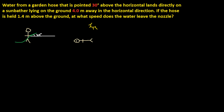Here's our little guy, pointing this nozzle of the garden hose towards this unknowing sunbather. The water stream goes like this — it just sprays on this guy.